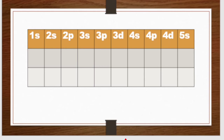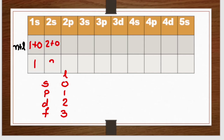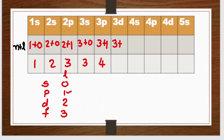To determine N plus L values, remember the azimuthal values: s = 0, p = 1, d = 2, f = 3. For 1s: 1+0 = 1. For 2s: 2+0 = 2. For 2p: 2+1 = 3. For 3s: 3+0 = 3. For 3p: 3+1 = 4. For 3d: 3+2 = 5. For 4s: 4+0 = 4. For 4p: 4+1 = 5. For 4d: 4+2 = 6. For 5s: 5+0 = 5. Arrange these orbitals in increasing order of their N plus L values to get increasing order of energy.